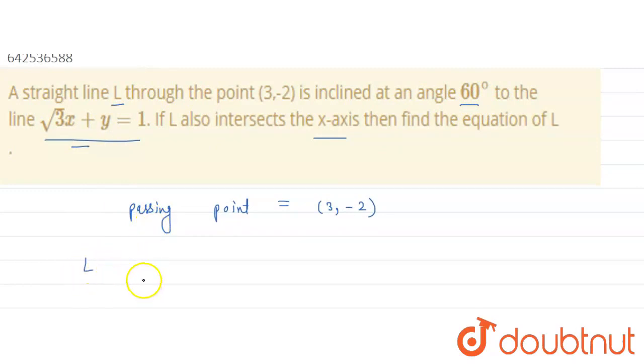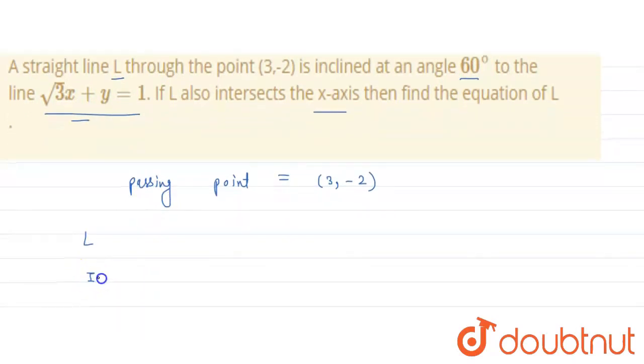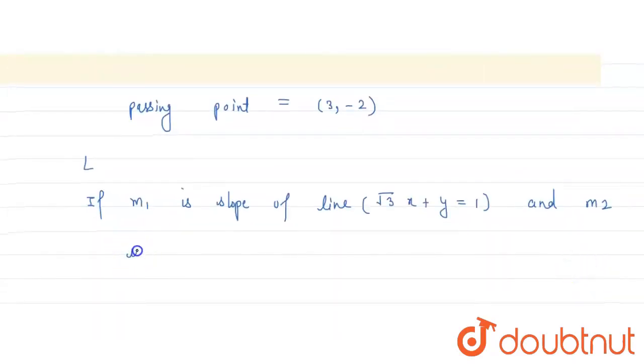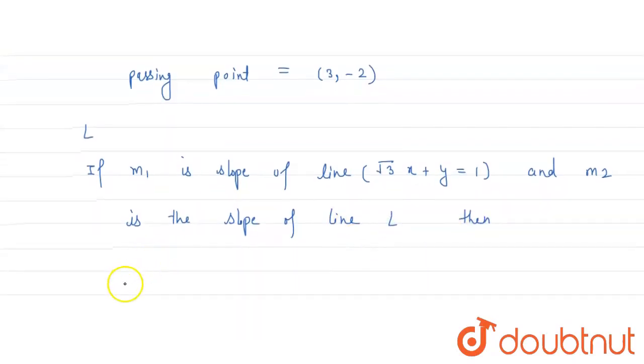So, if m1 is the slope of line root 3 x plus y equals 1, and m2 is the slope of line L, then what can we say about the angle between them?